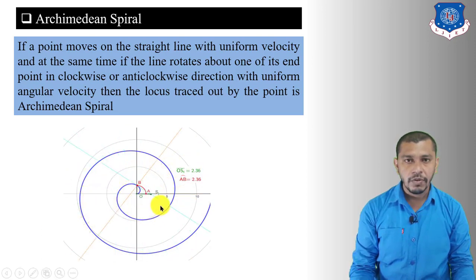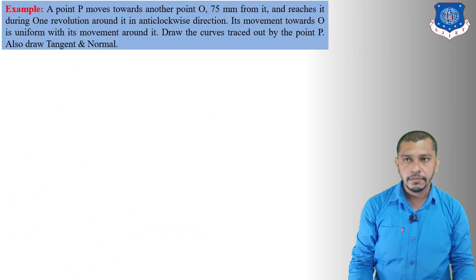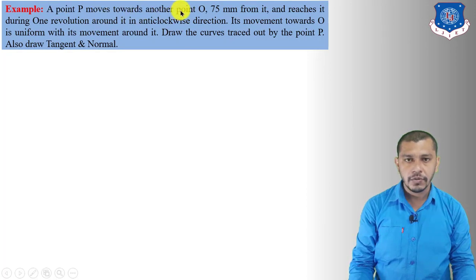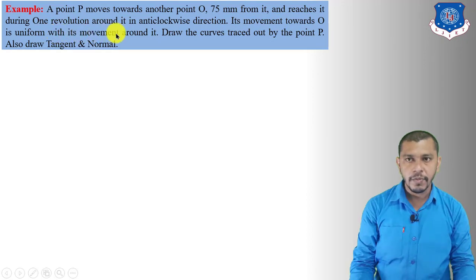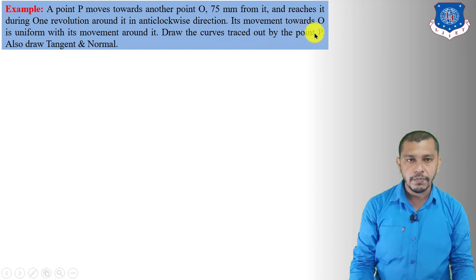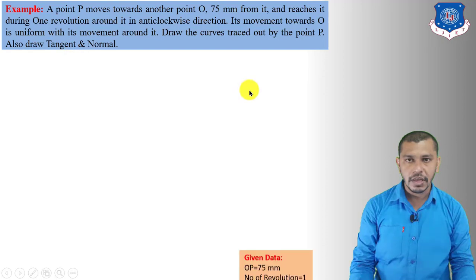Let's start with the first problem. A point P moves towards another point O, 75 mm from it, and reaches it during one revolution — one convolution — around it in anticlockwise direction. Its movement towards O is uniform with its movement around it. Draw the curve traced out by point P, and also draw the normal and tangent to the curve.